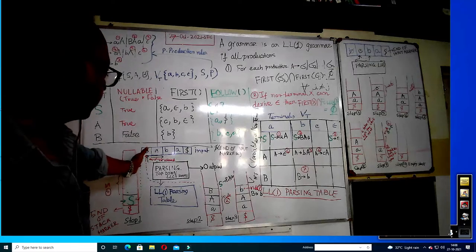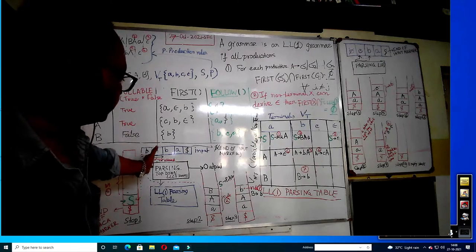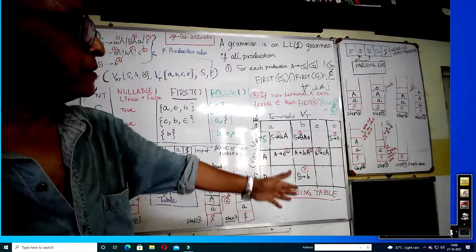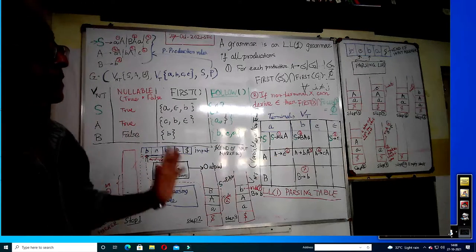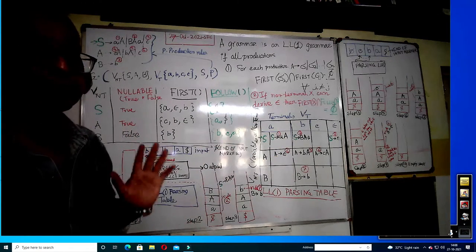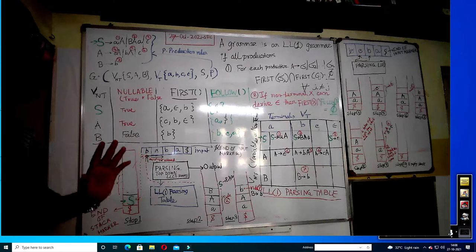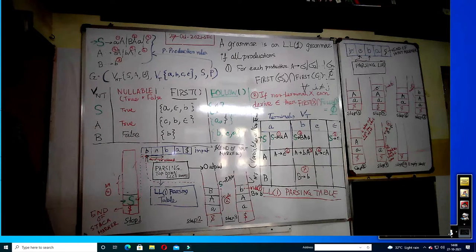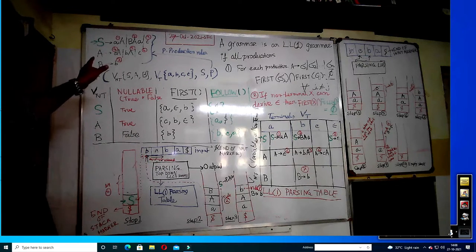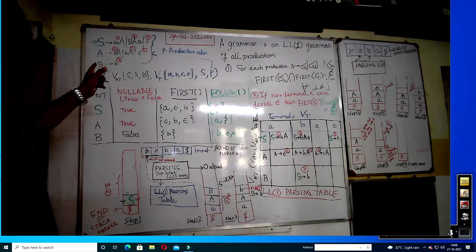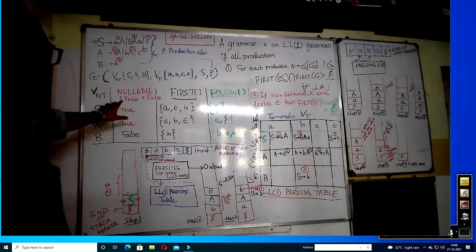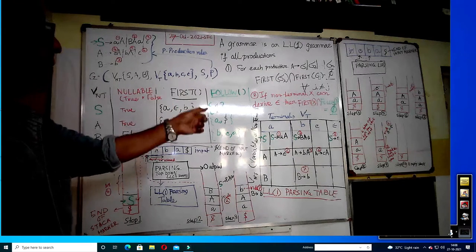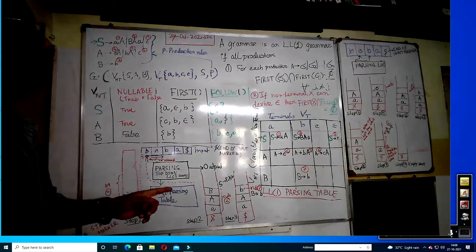Your input can only move forward — it reaches dollar, and you have emptied your stack. That means your parsing is successful. It's great top-down LL(1) parsing. To revise: first we get the rules and check whether variables are nullable or not. If nullable, we check whether FIRST of that variable and FOLLOW of that variable should be disjoint.